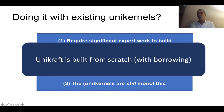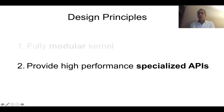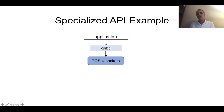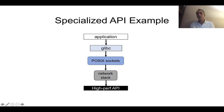Unicraft is built from scratch with some borrowing. The second design principle had to do with specialized APIs. Here's a little example: imagine you have an application, and it compiles against some sort of libc, in this case glibc. Under that, it needs to do some networking, so it uses sockets. The network stack is underneath, and eventually you get to some high-performance API. In Unicraft, you could bypass all of that and go straight to UDP.